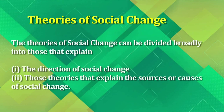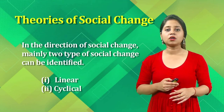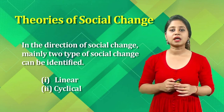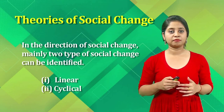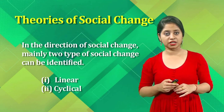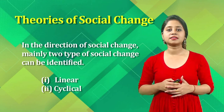There are different theories in sociology that explain the phenomena of social change. These theories can be broadly divided into those that explain the direction of social change and those that explain the sources or causes of social change. In the context of direction of social change, two types of theories can be identified: the linear theory and the cyclical theory.